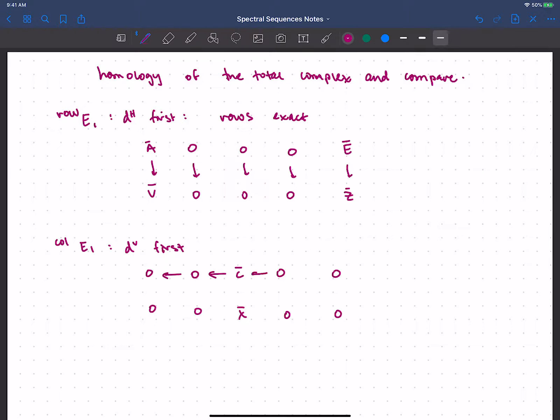And then I'll be left with some horizontal differentials on the next page. So this is my E_1 page using the column filtration. And the point is that when I look in the total degrees where I have this X bar and the C bar.